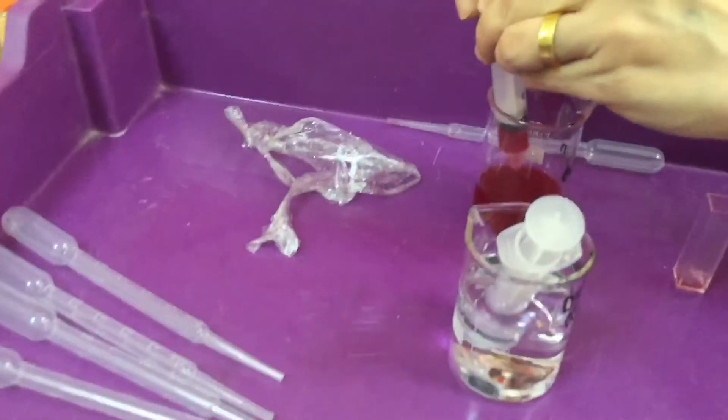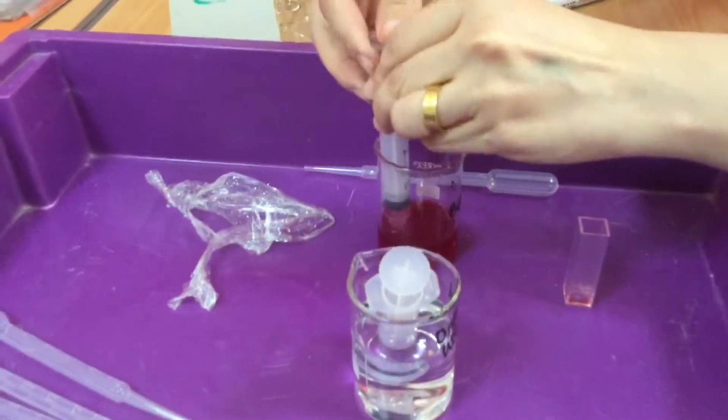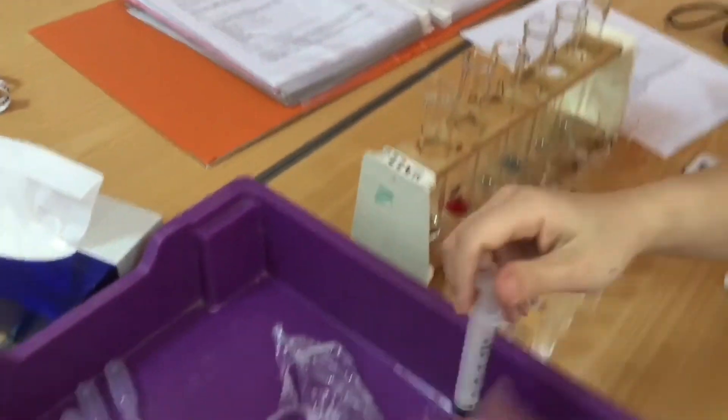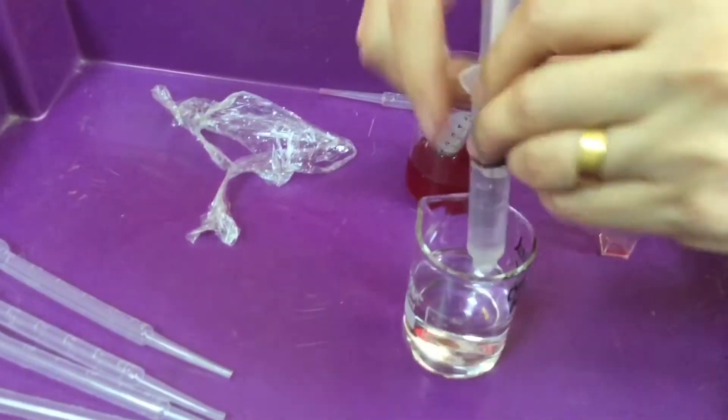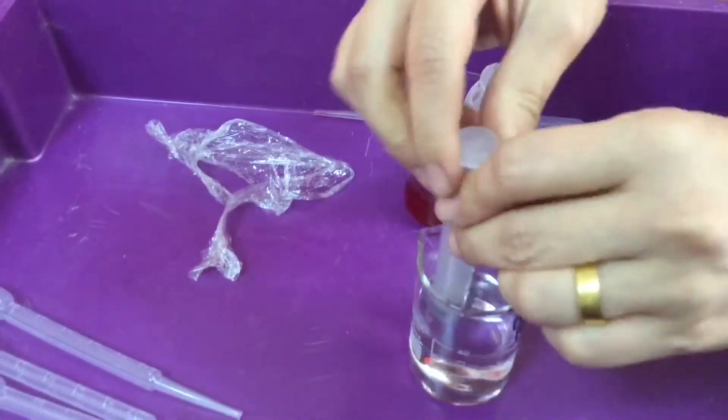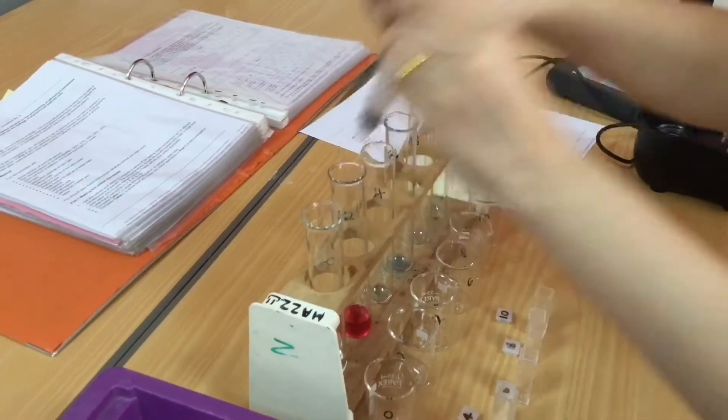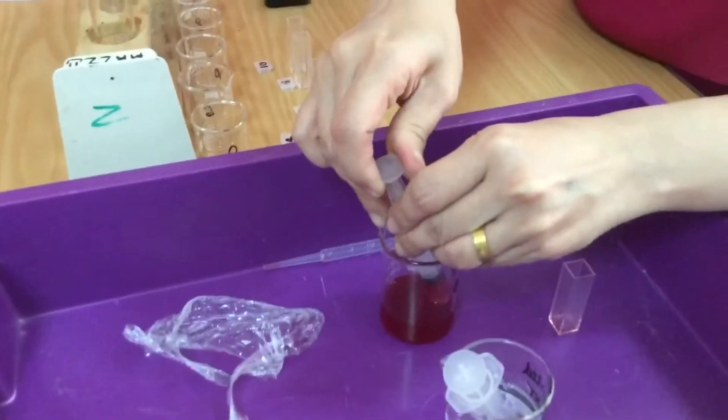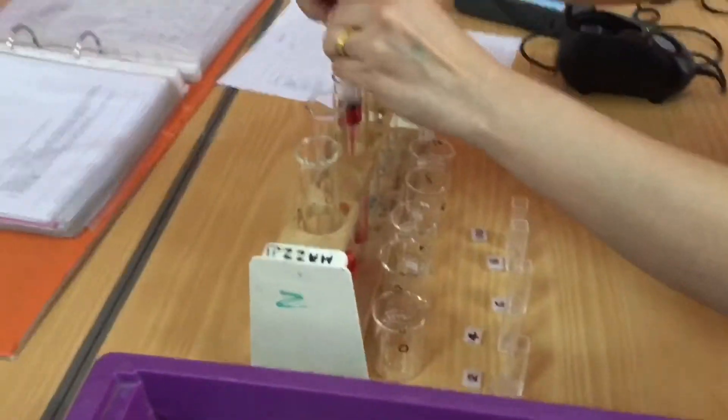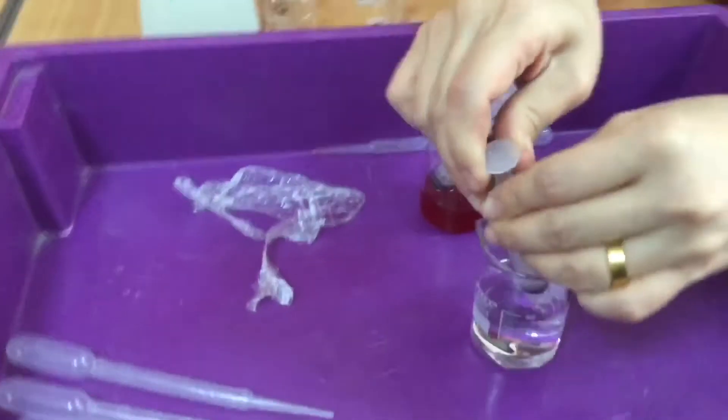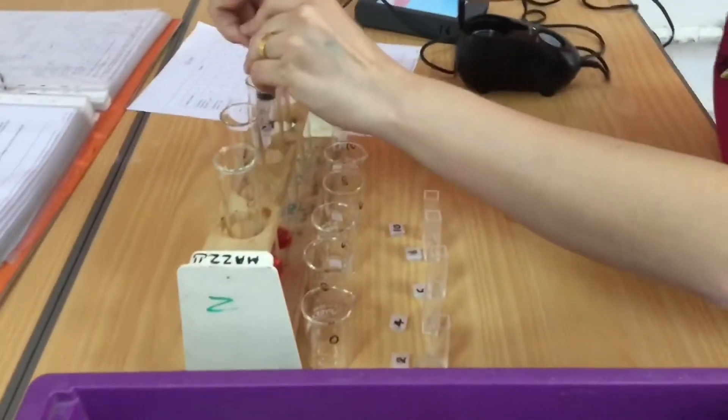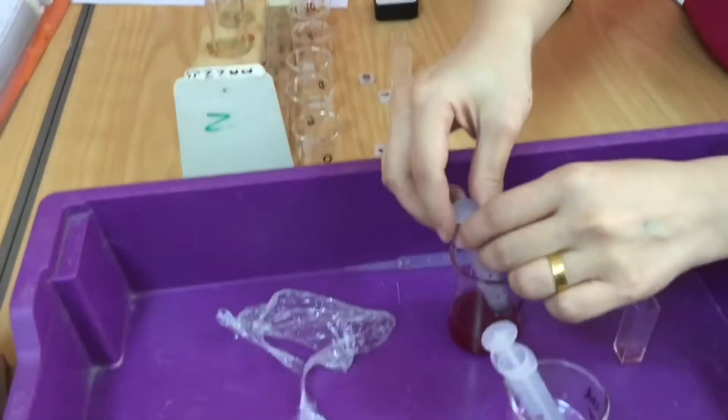In the second one I'm going to put 1ml of my stock solution, you can see there 1ml, into the second test boiling tube and then I'm going to take 4ml of my water, making sure I don't cross contaminate and I keep 1 syringe to 1 beaker. The next one I'm going to put 2ml of my beetroot stock solution extract and I'm going to put 3ml of the water.